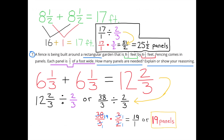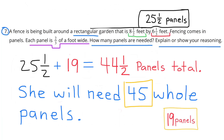For the two red sections: 6⅓ plus 6⅓ equals 12⅔. So 12⅔ divided by 2/3 is the same as 38/3 divided by 2/3. Multiplying by the reciprocal: 38/3 times 3/2 equals 19. The two red sections total 19 panels. Adding green and red together: 25½ plus 19 equals 44½ panels total. So she'd need 45 whole panels to build her garden, with half a panel left over.